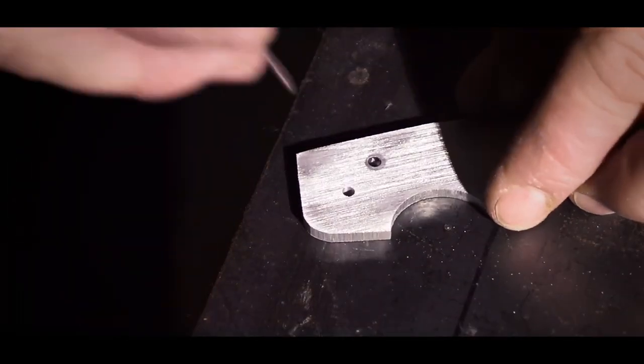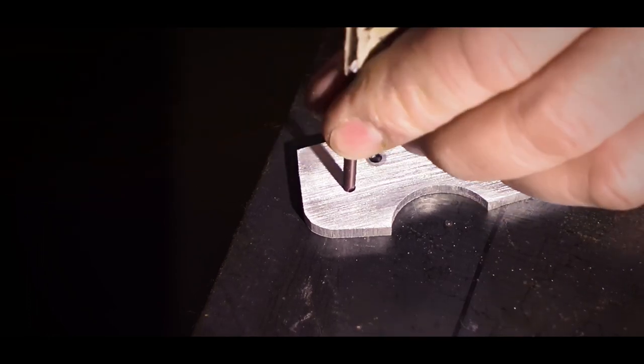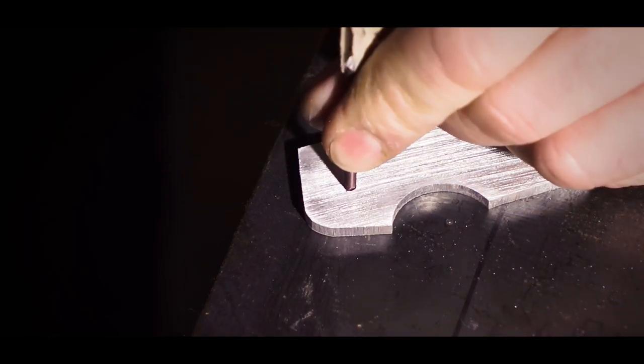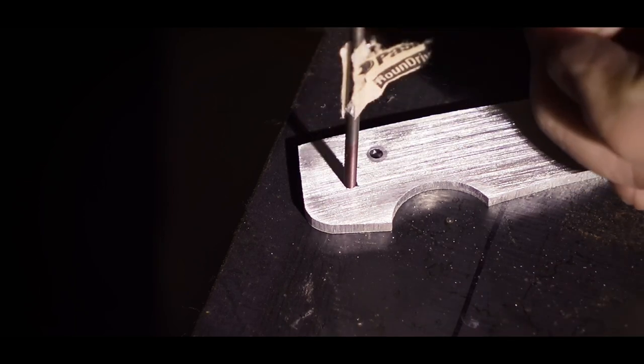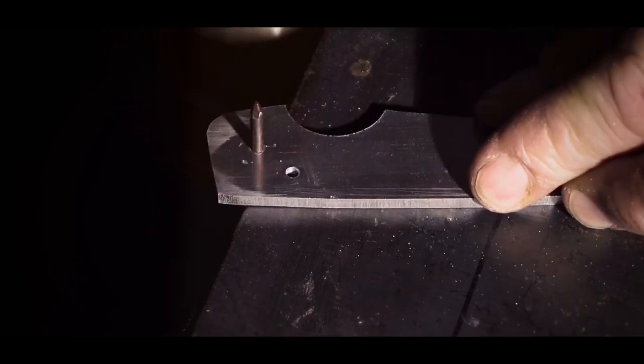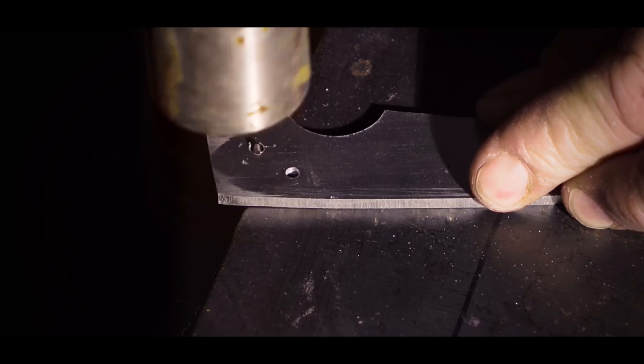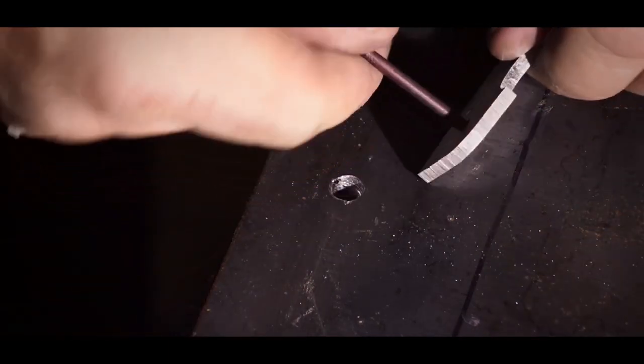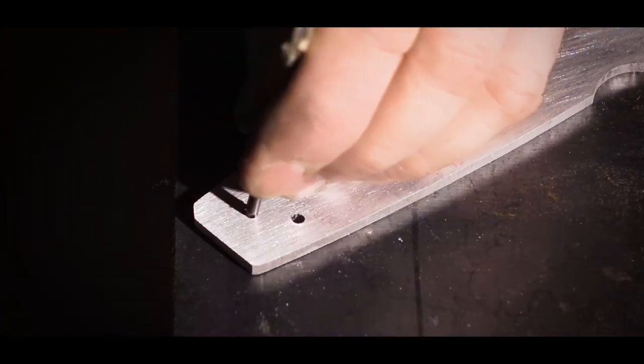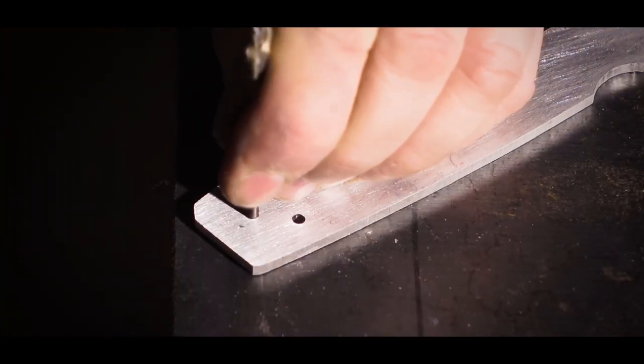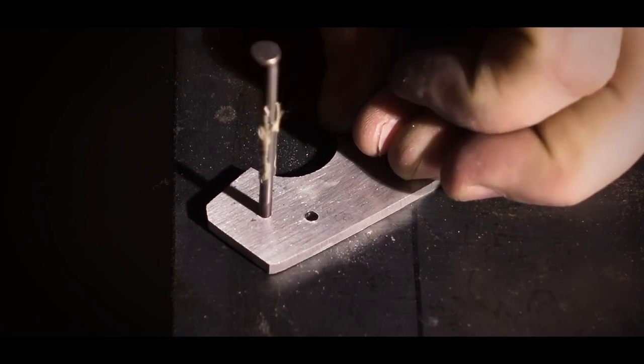The pivot holes in the spine lock and the blade are one-eighth of an inch. I drilled the holes in the handle scales a little bit smaller than that so that I could use these nails as pins. The idea for the smaller hole is that I'll drive the nail in and then the hole will widen out to fit the nail precisely. And then I can just file off the burr that pushed out on the other side.